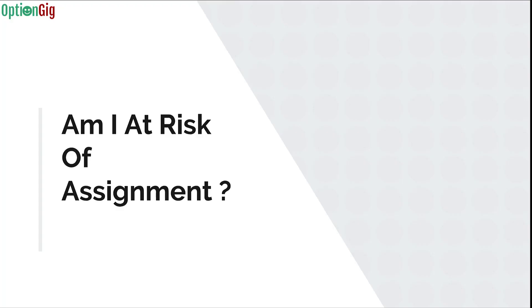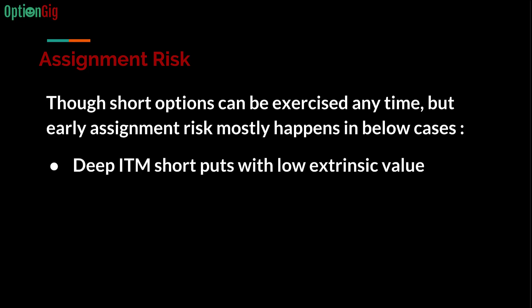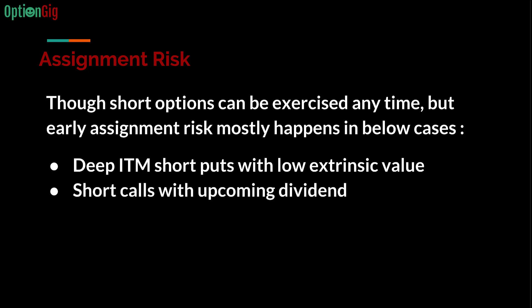Now let's understand when you are at risk of assignment. This applies only to American-style options. Early assignment risk occurs in two main cases: for short puts, if the option is deep in the money with very low extrinsic value; and for short calls, if there is an upcoming dividend whose amount exceeds the extrinsic value remaining in the option.